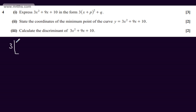So we'll have now 3 lots of x squared plus 3x and then I'm going to add the 10. Completing the square within the brackets, we'll have 3.